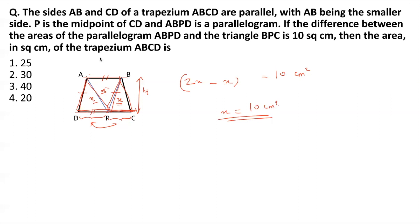Now, what do they want in the question? They want the area of trapezium ABCD, which you observe is nothing but the area of all these triangles combined: X plus X plus X, that is 3X. So if X is 10 square centimeters, 3X will be 3 times 10 or 30 square centimeters. Your answer: option 2.